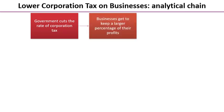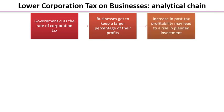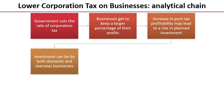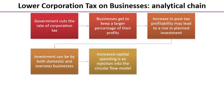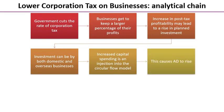The government cuts the rate of corporation tax; businesses keep a larger percentage of their profits. This increase in post-tax profitability may lead to a rise in planned investment — this can be by both domestic and overseas businesses. Increased capital spending is an injection into the circular flow, which causes AD to rise. At this point it might be a great idea to draw yourselves an AD-AS diagram.